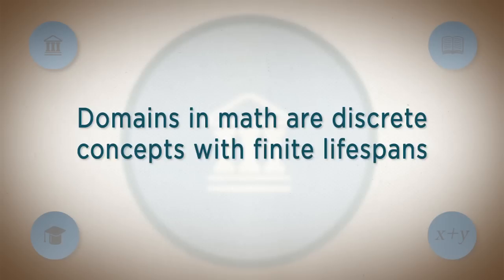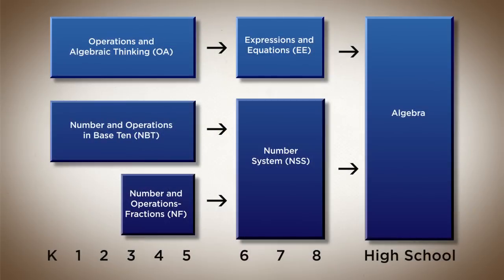A domain in the Common Core State Standards is a slightly smaller, more focused stream of ideas that has a beginning and an ending point. For example, the core number and operations domains in elementary school are: operations and algebraic thinking, number and operations in base 10 going from kindergarten to fifth grade, and fractions going from third grade to fifth grade.